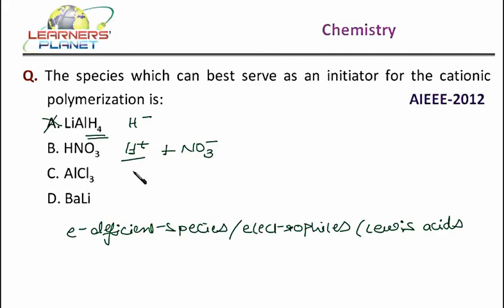Now AlCl3, aluminium chloride, it is a Lewis acid. That is an electron deficient species. So which will start the cationic polymerization? Aluminium chloride.